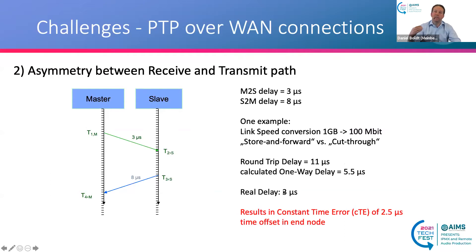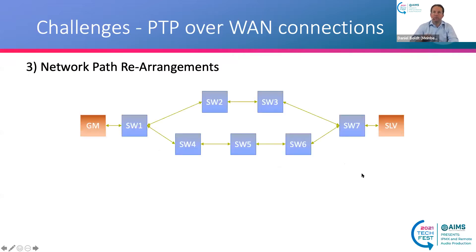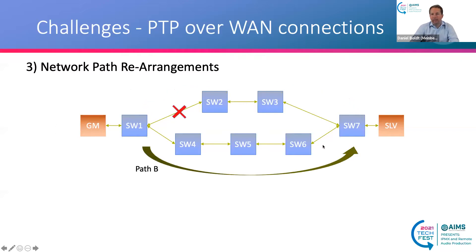You never know this if you only see it from the perspective of the slave. The third challenge is network path rearrangements. For example, you may have two possible paths from grandmaster to slave — via switch 2 and 3 — and if the link between switch 1 and 2 breaks, a different path has to be taken. This path may consist of a different number of hops, resulting in another asymmetry value seen at the slave.